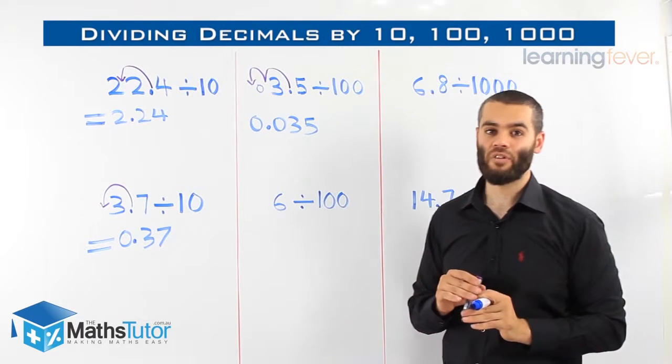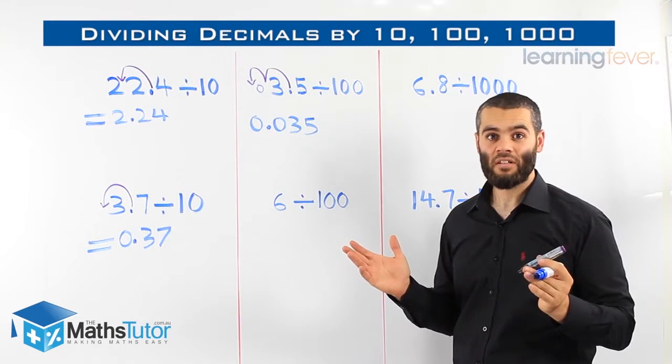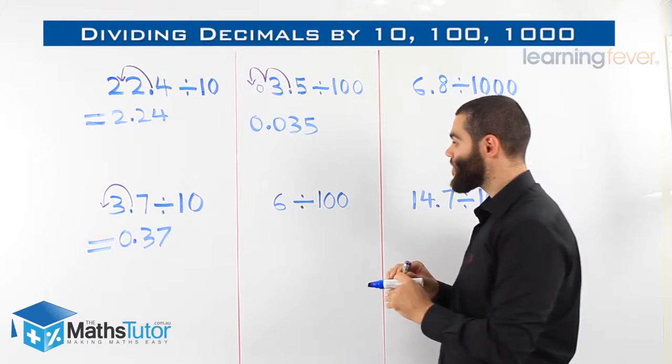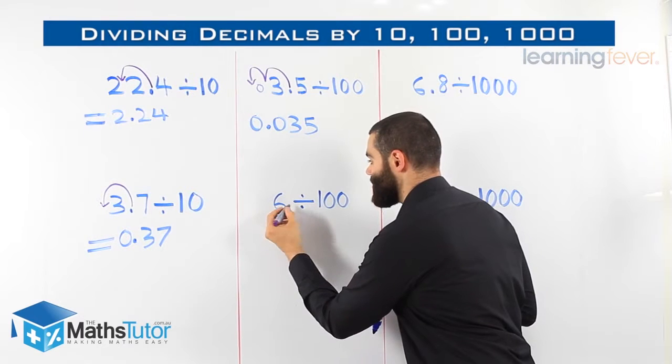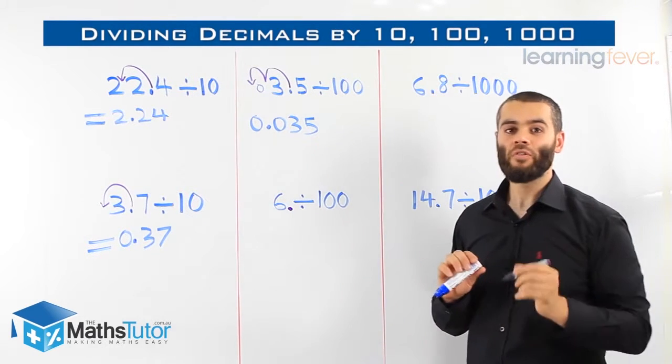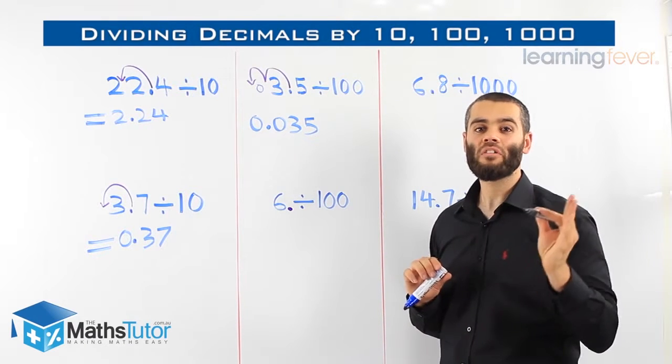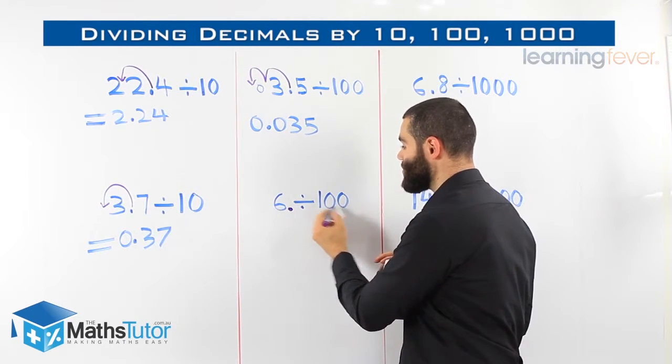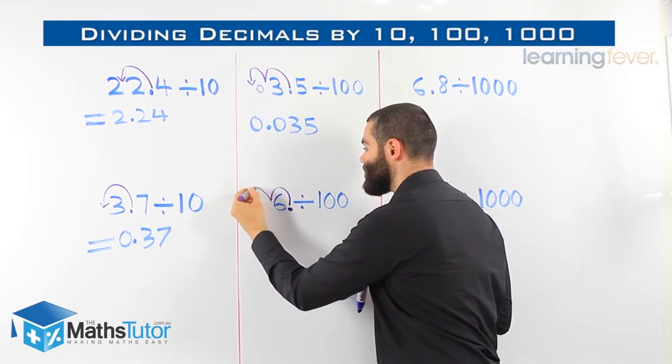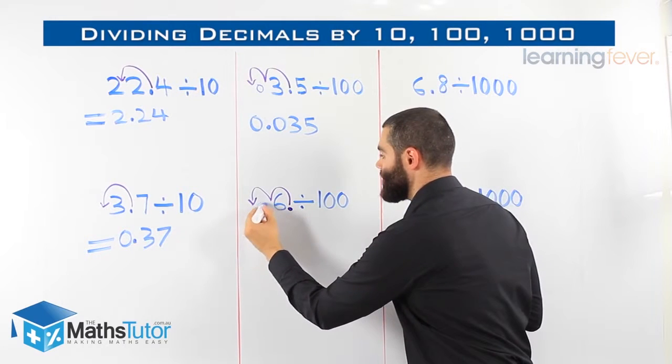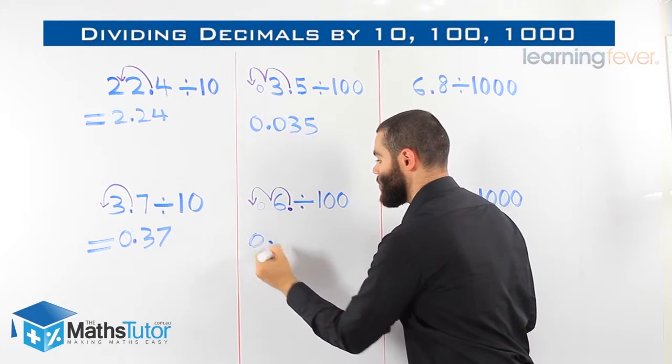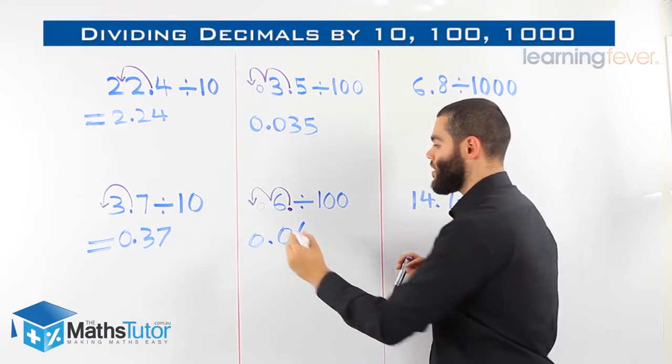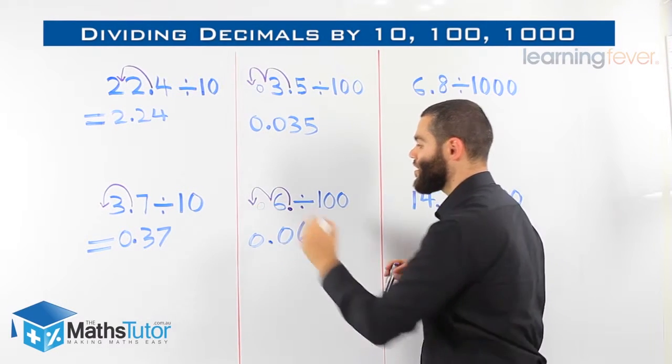Six divided by a hundred. Hang on, I can't see a point, but we know that six is a whole number, which means 6.0. Six point zero, meaning the actual point is right there. So it's very important if you're dealing with a number and you don't see the point, you know the point is right at the end. So 6.0, we're grabbing the point, we're saying you're going to move twice, because two zeros, twice to the left. Once, twice. So there's going to be a zero here. Zero point, we have a zero and we have our six. 0.06, we've moved it twice to the left.